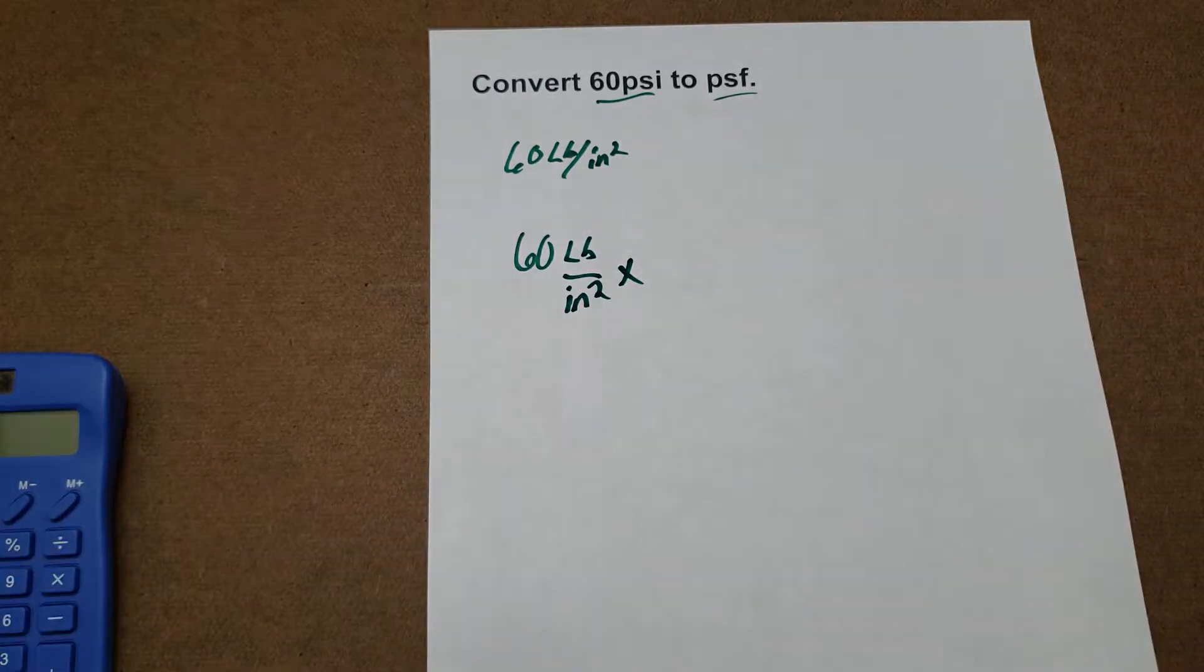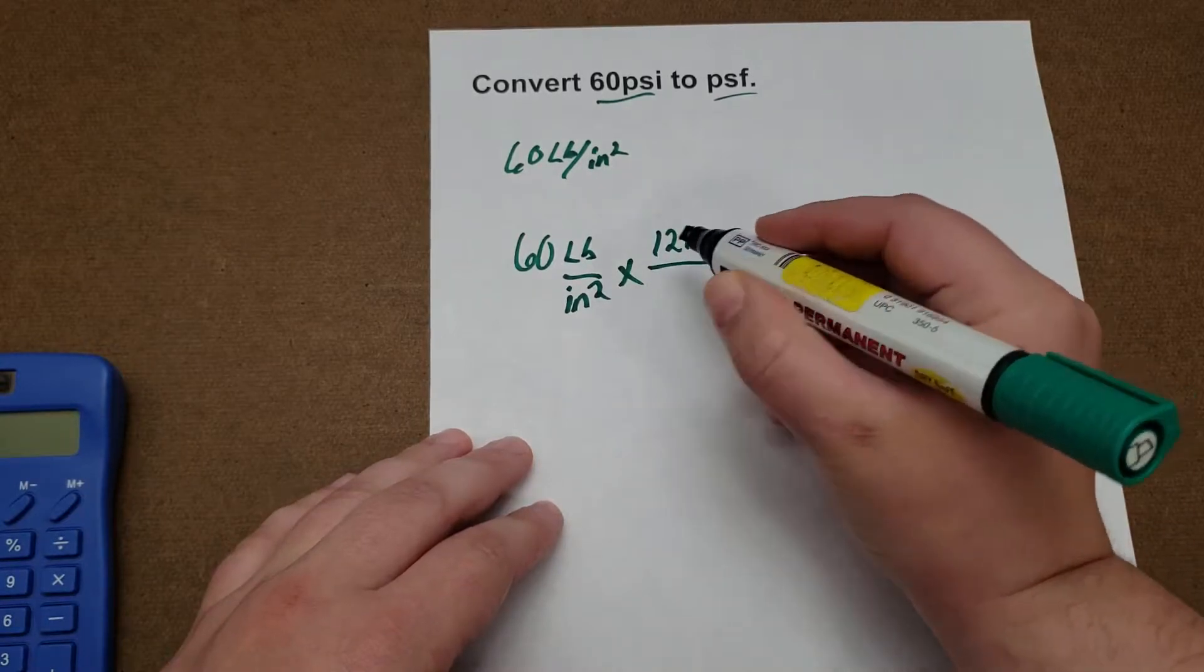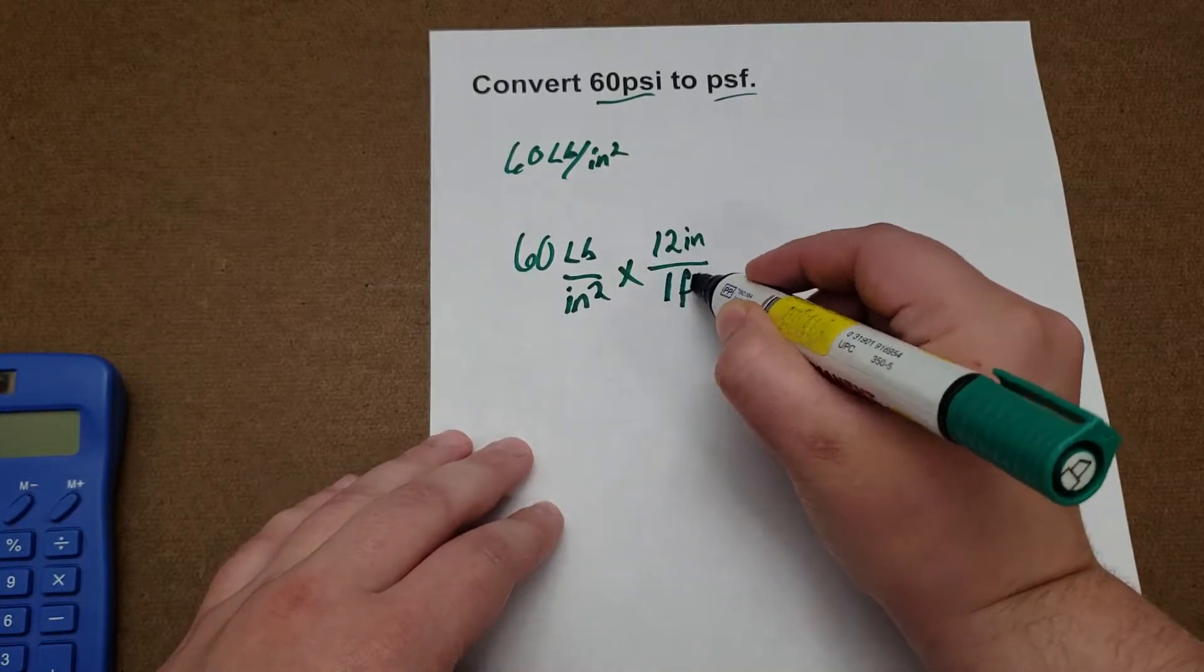and we know that there are 12 inches in a foot, so 12 inches per 1 foot.